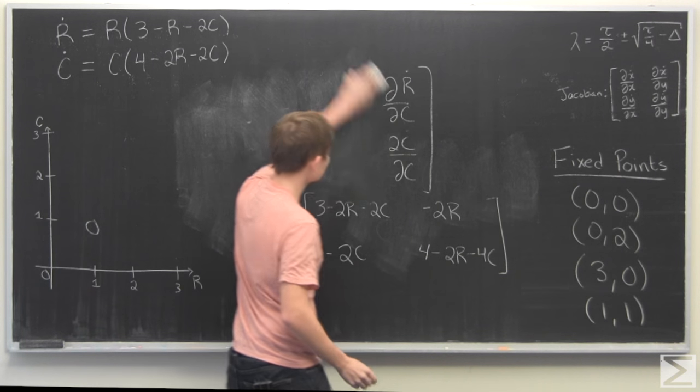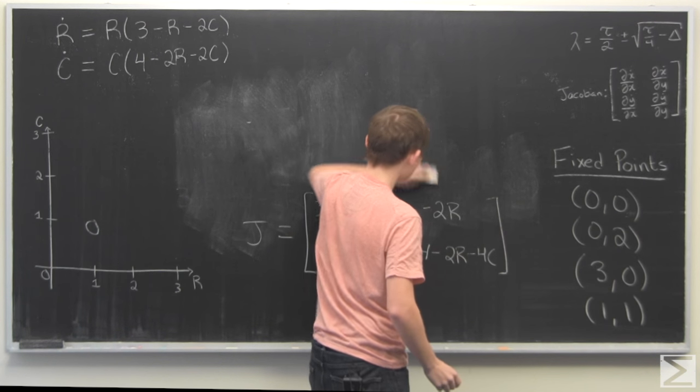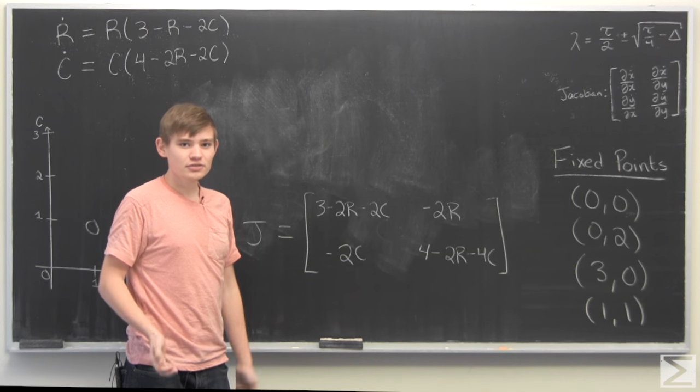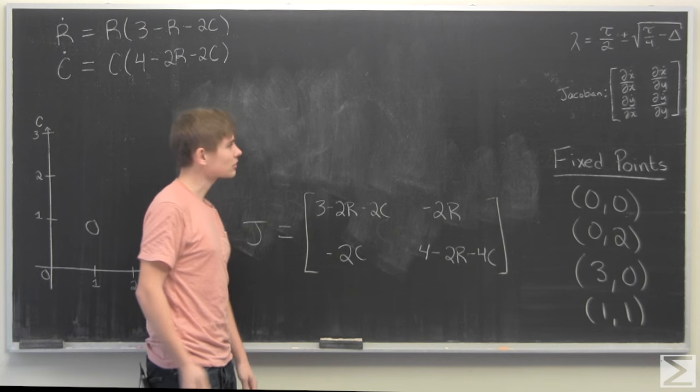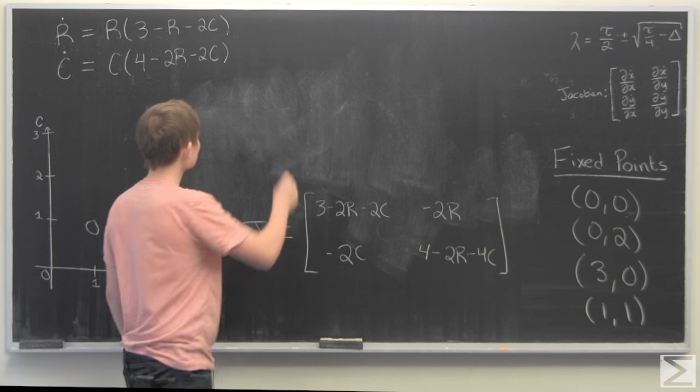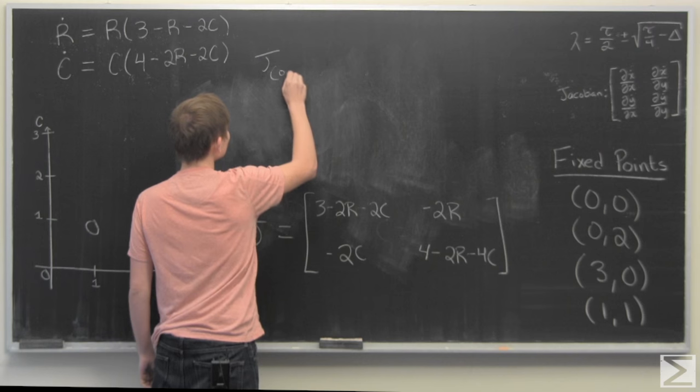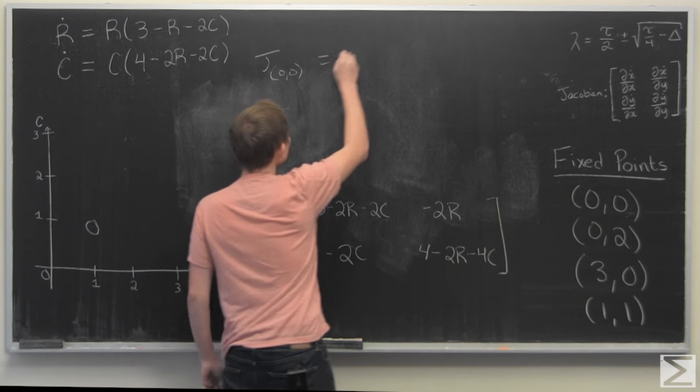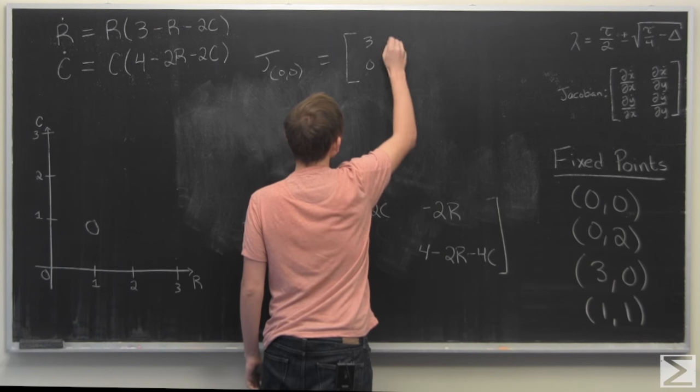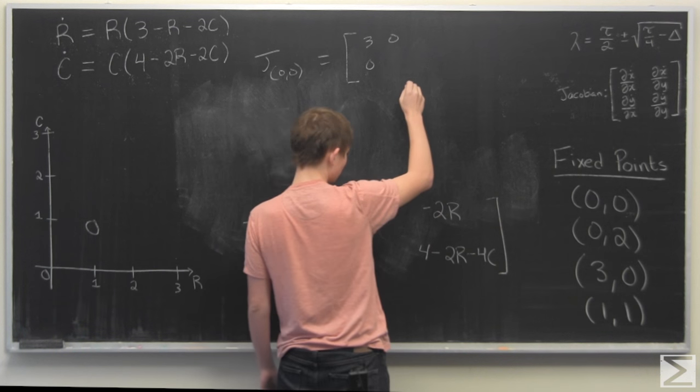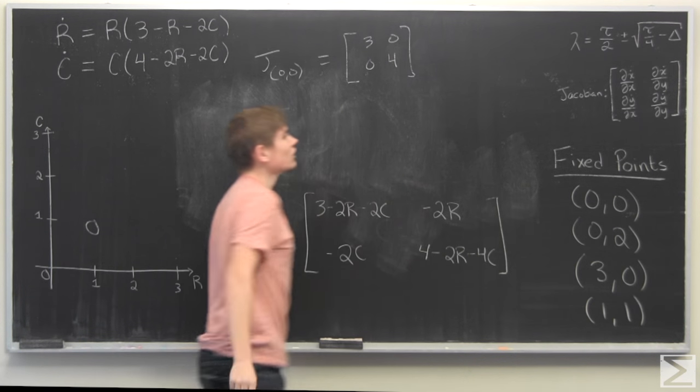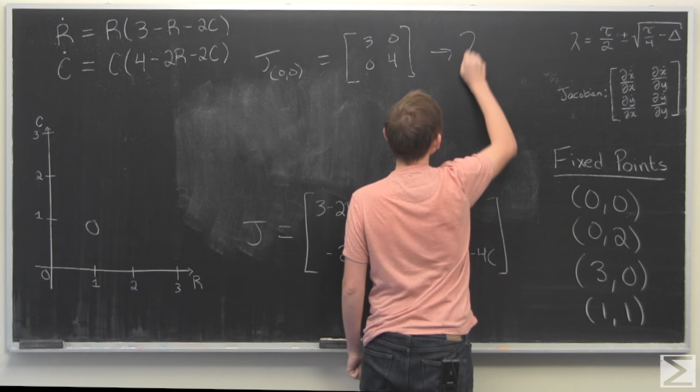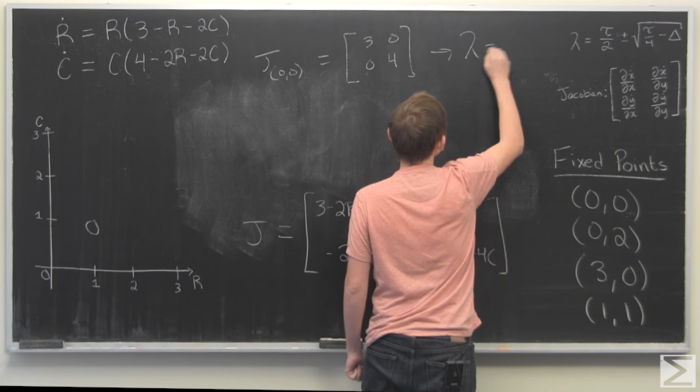So we have the Jacobian equal to this. And now what we do is we plug in each fixed point into the Jacobian, find its eigenvalues, and from there we can determine the stability of this matrix. So let's start with the trivial one, 0, 0. If we plug that in, we get a Jacobian of 3, 0, 0, 4. It's very easy to find the eigenvalues of this. We find that eigenvalues are just 3 and 4.